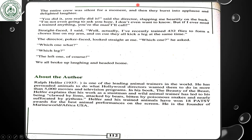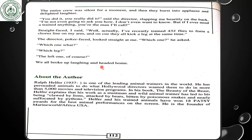'You did it! You really did it!' said the director, slapping me hard on the back. 'I'm not even going to ask you how. I don't even want to know. But if I ever need to train anything, you are the man I'll call.' 'Straightforward,' I said. 'Actually, I have recently trained 432 flies to form a chorus line on my arm, and on one cue they all kick a leg at the same time.' The director broke face and looked straight at me. 'Which one?' he asked. 'Which one what?' 'Which leg?' 'The left one, of course.' We all broke up laughing and headed home.